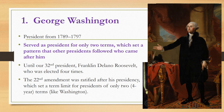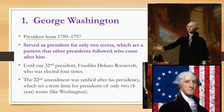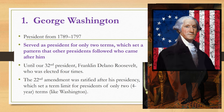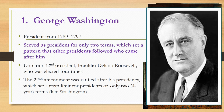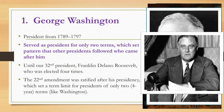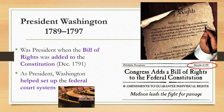It wasn't until our thirty-second president, Franklin Delano Roosevelt, that this precedent changed — he was elected four times. After he was president, the 22nd Amendment was ratified, which set a term limit for presidents of only two four-year terms, like George Washington. President Washington was a key individual during these formative years in our nation's history.